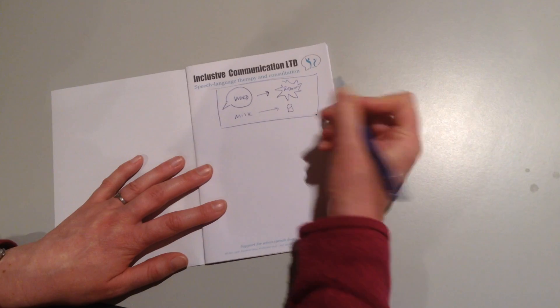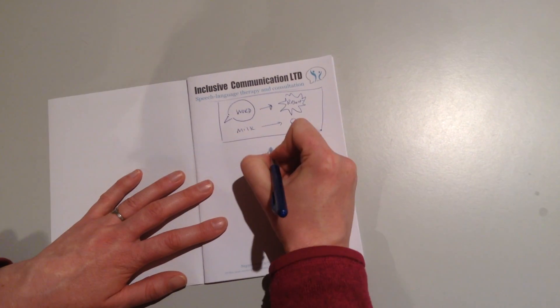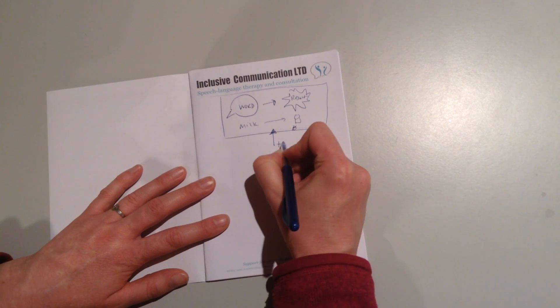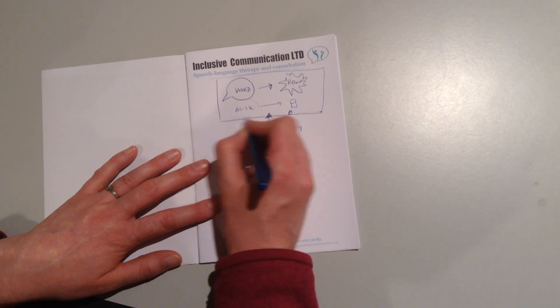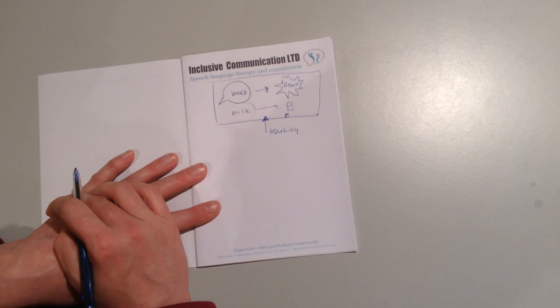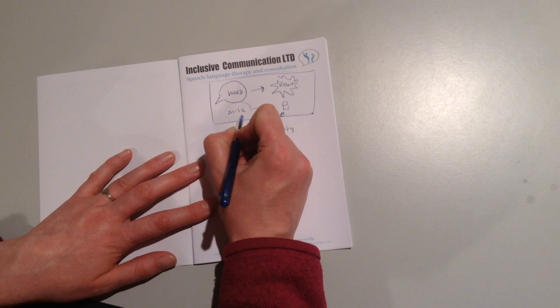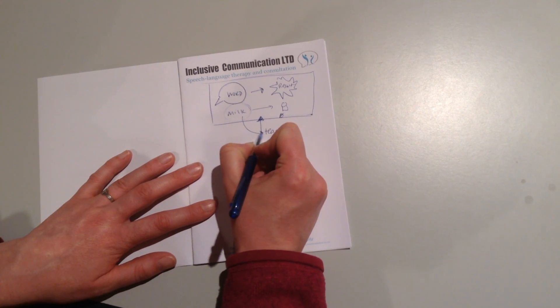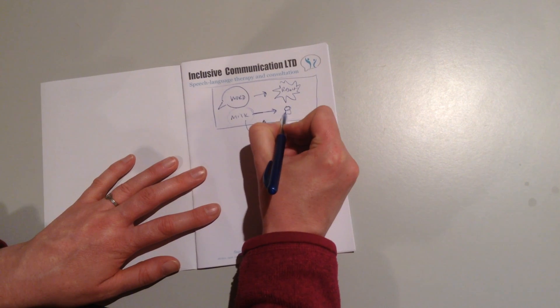What we don't want to do is start interjecting a lot of teaching and prompting, because when they ask for milk, we don't want them to think that's a request for a whole bunch of teaching and prompting. What we want is when they say milk, it's linked to the thing.